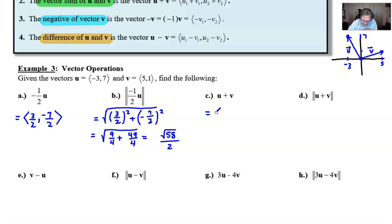For u plus v, you're simply going to add the components. So the negative 3 and the 5 will get added together. You probably don't have to show this work, but for the purpose of this video, I'm going to be a little bit more detailed here.